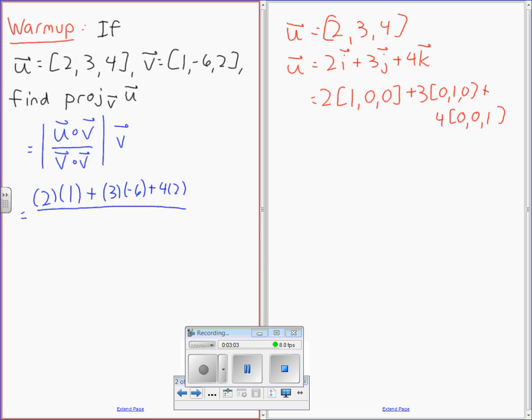v dot v is going to be 1 times 1 plus negative 6 times negative 6 plus 2 times 2.